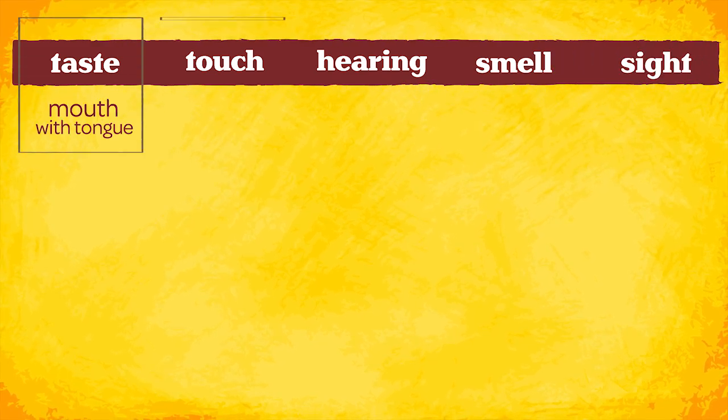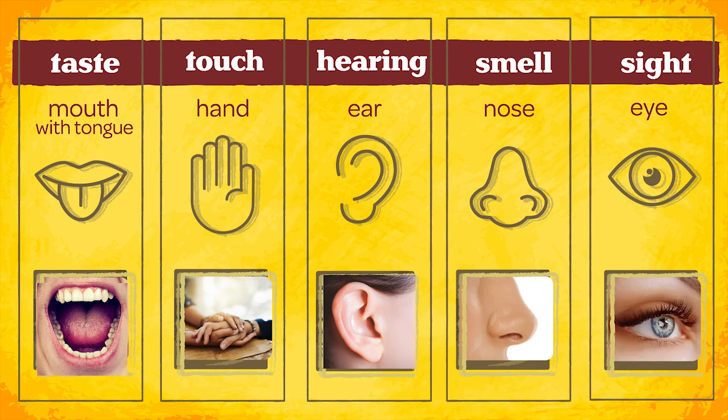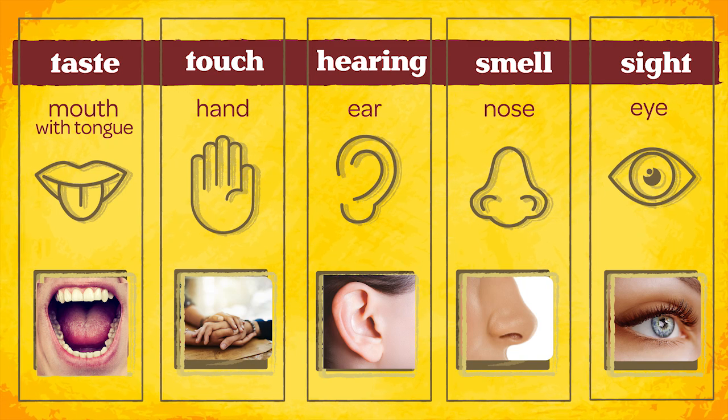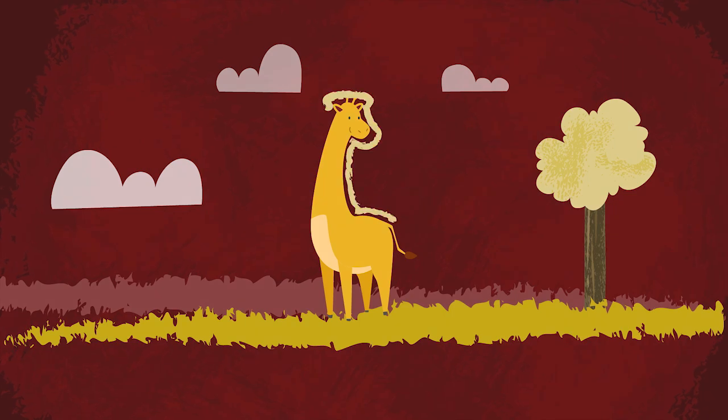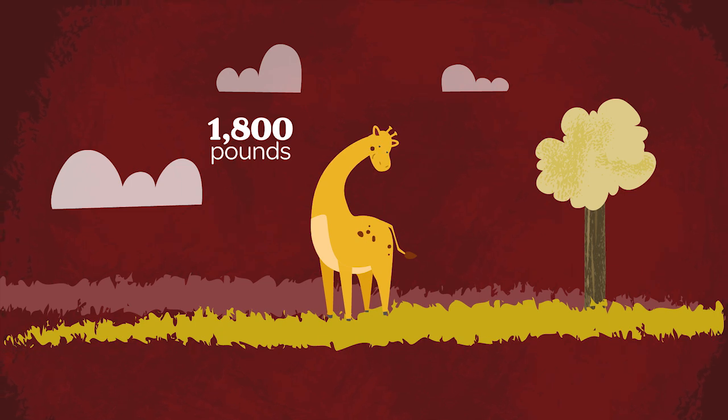When a person observes something, they are using their five senses to notice an object's characteristics. Size, color, shape, texture, and weight are some characteristics that can be observed through the senses.